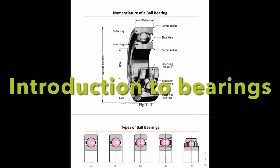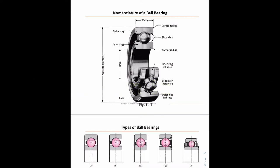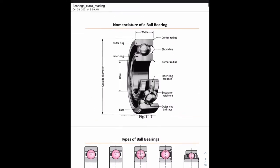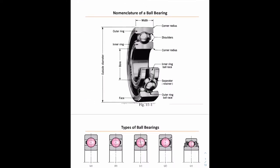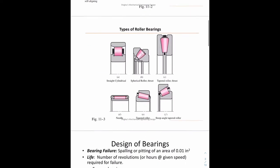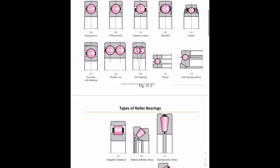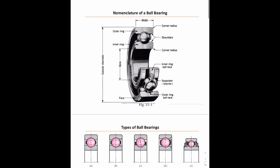Good day everyone. This is the introduction to Barron's lecture. There are two PDFs: the Barron's Extra Reading, which is this lecture, and the Barron's Selection, which goes into actually doing the math behind selecting a bearing for an application. This Barron's Extra PDF that I have open here — we'll just be looking at the first three slides, and the rest will make more sense after doing the other lecture.